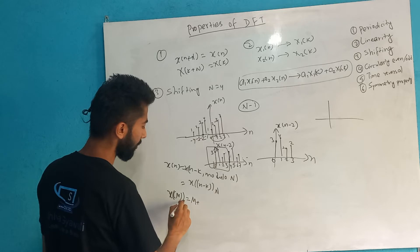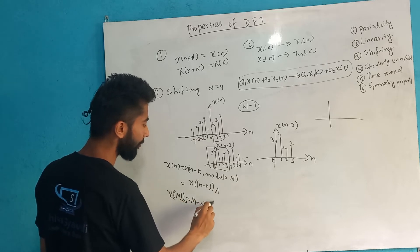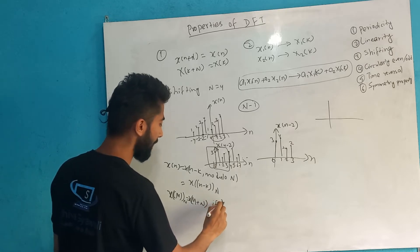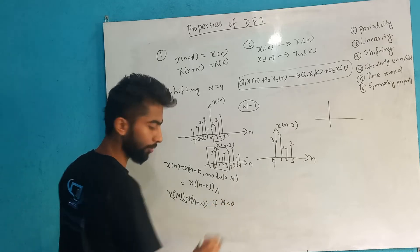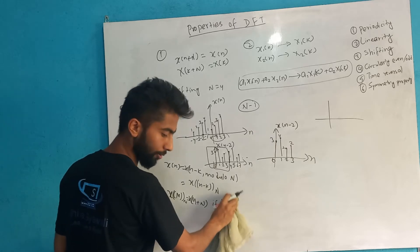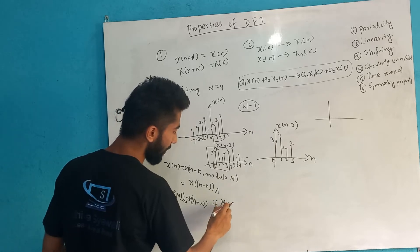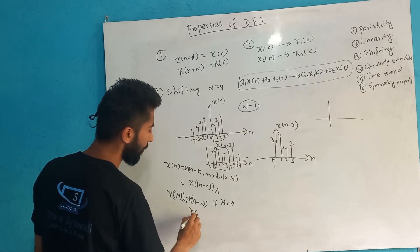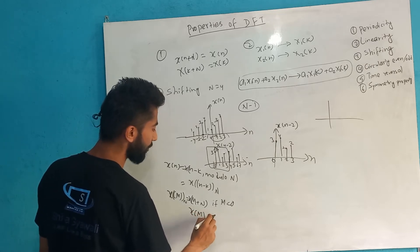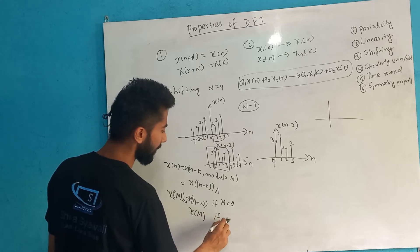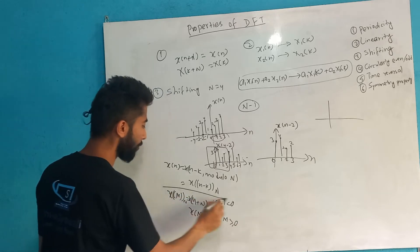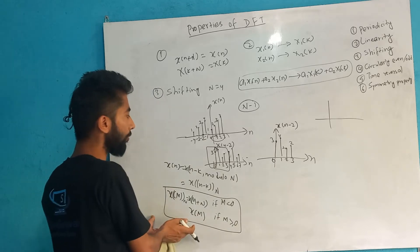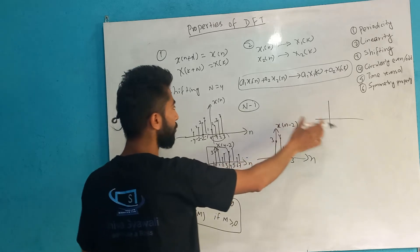x[n-2]: if m is less than 0, then add N to the index. If m is greater than or equal to 0, use x[m] as it is. This is circular shifting in DFT. So let's prove this — what is the value of x[n minus 2]?